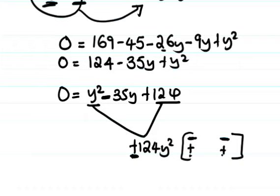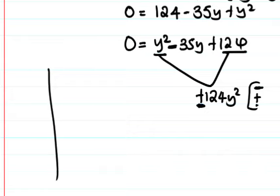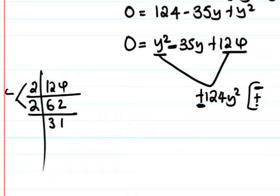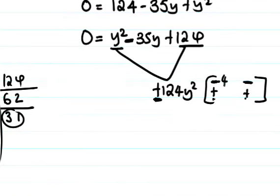We need to find the factors of 124 that add to 35. We have 1 times 124, 2 times 62, 4 times 31.